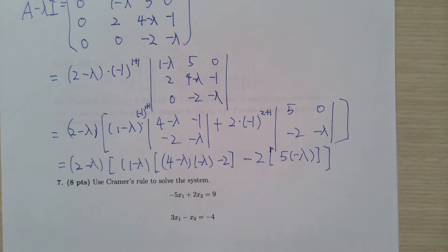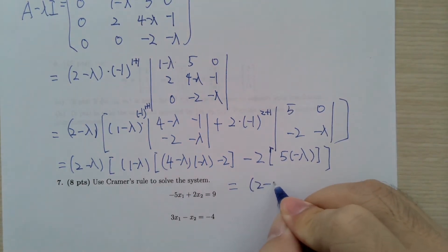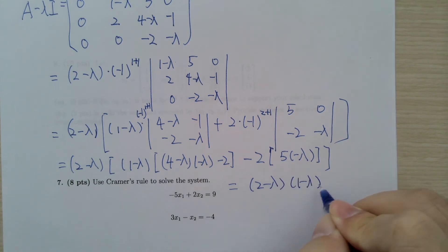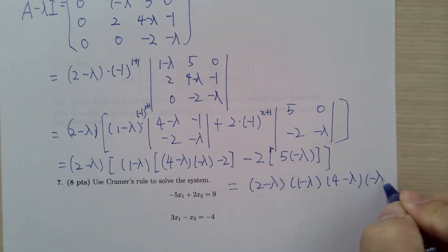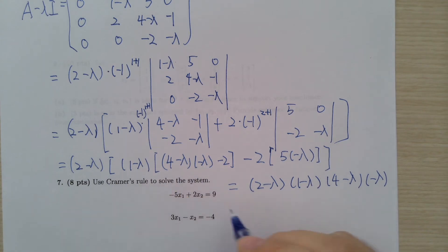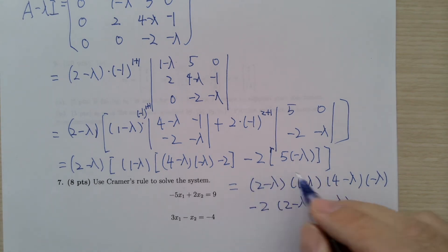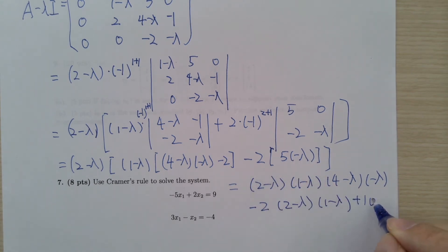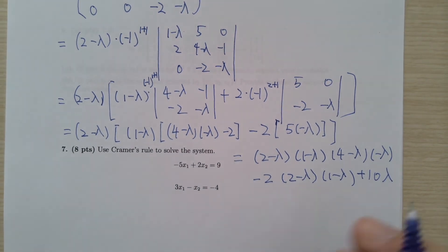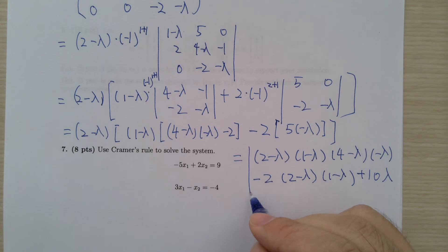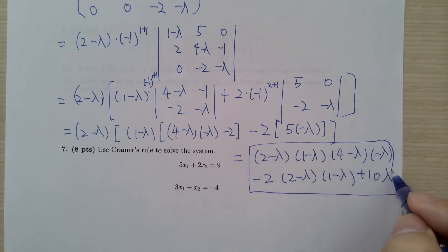Putting everything together: (2 - λ)(1 - λ)[(4 - λ)(-λ)] — don't forget this minus 2 — times (2 - λ)(1 - λ), and then for this part you get plus 10. You can expand and simplify further, but we can leave the answer in this form.